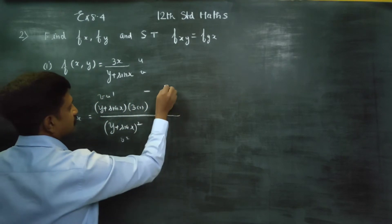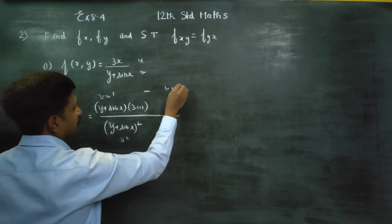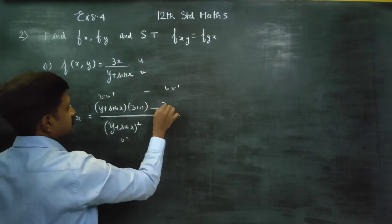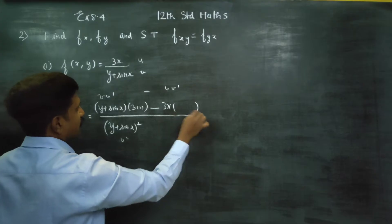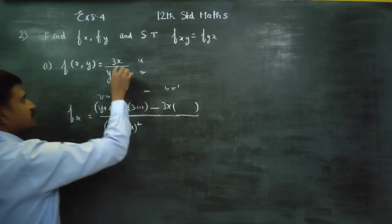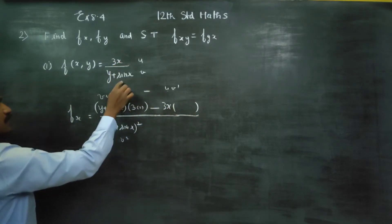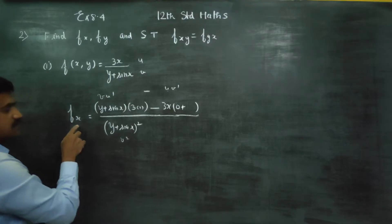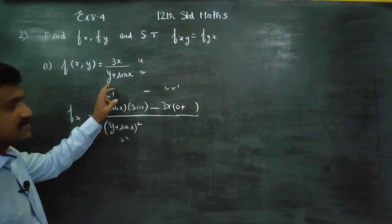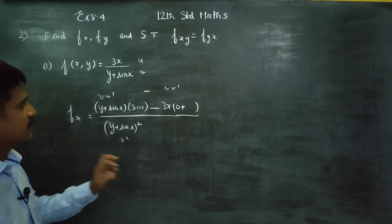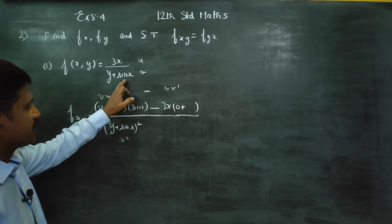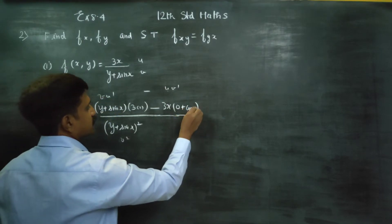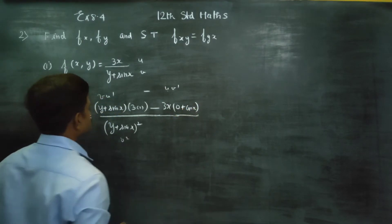Minus u into v dash. U is 3x. Now differentiate v with respect to x. We do not differentiate y — because this is partial differentiation, y is a constant. We only differentiate sin x, which gives cos x.